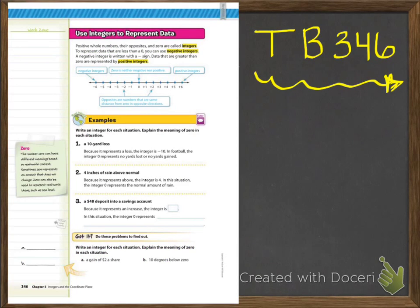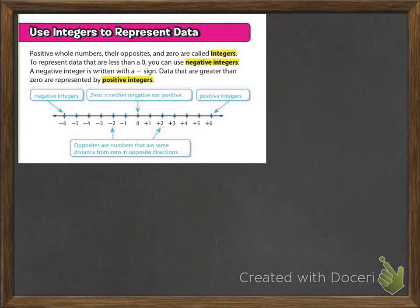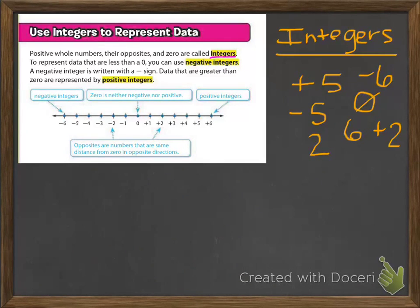Now on textbook page 346, look at the top where in the pink you should see: use integers to represent data. It says positive whole numbers, their opposites, and 0 are called integers. You want to make sure that you've grouped these into integers. When they say positive whole numbers, we know what that is. When they say their opposite, that means the negative opposite — the opposite of positive 6 would be negative 6. And 0 is also included as an integer.